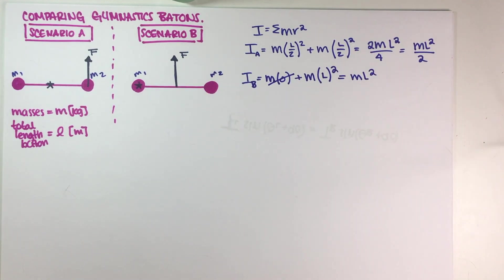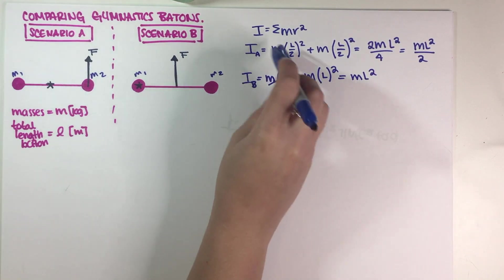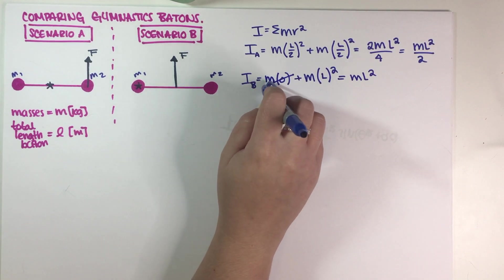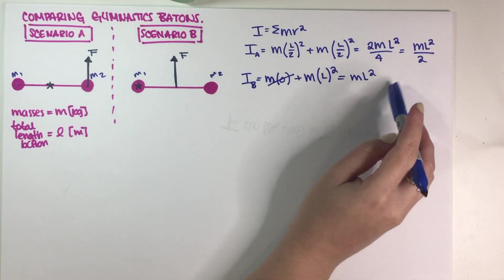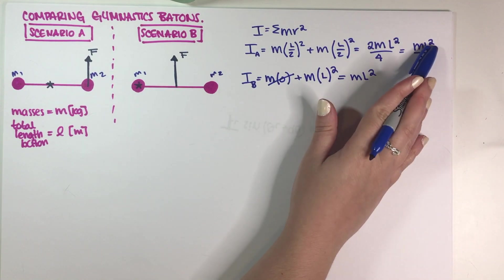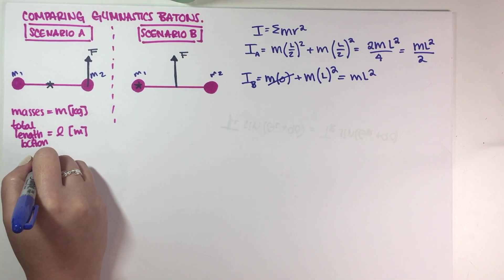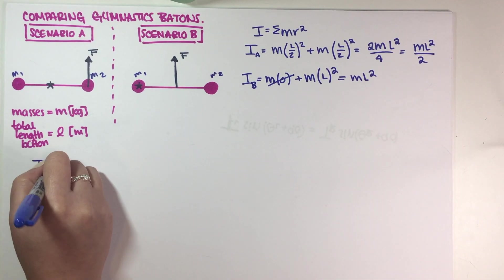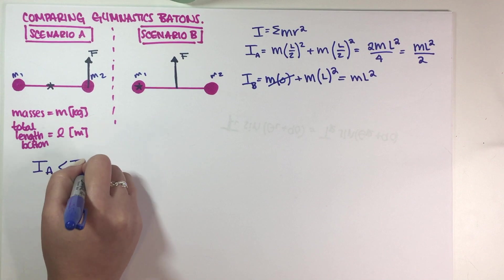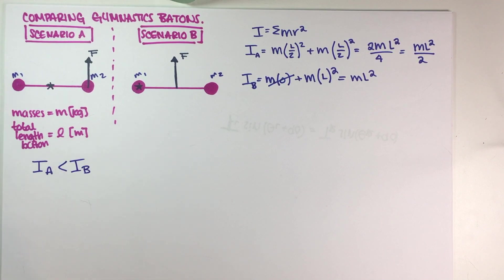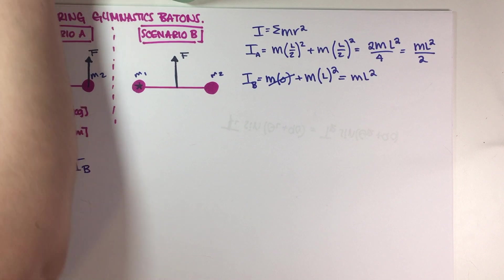Now we have both moments of inertia. Scenario A is one-half ML squared and scenario B is ML squared. This means that moment of inertia B is greater than moment of inertia A, and this solves the first part of the problem.